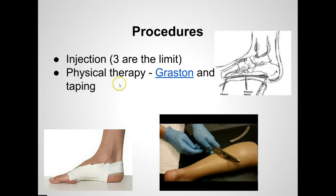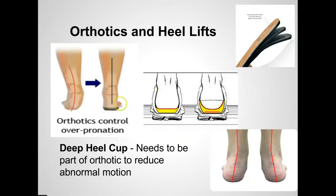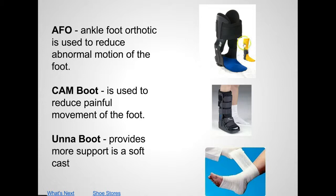Certainly in a joint, cortisone can be helpful, especially in the ankle joint. Physical therapy may also be needed. Orthotics can be helpful, especially if there's a lot of pull on the nerve or on the tendon. As you can see, orthotics can help lift up the heel and move it to the outside as well. Using an AFO can be very helpful for a lot of these conditions — by restricting movement in the ankle joint, it can reduce pressure on the ankle, the tendons, and the nerve.